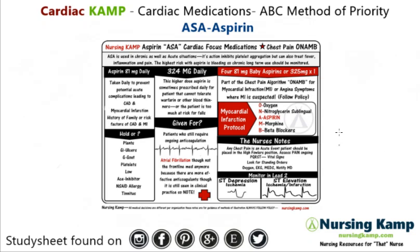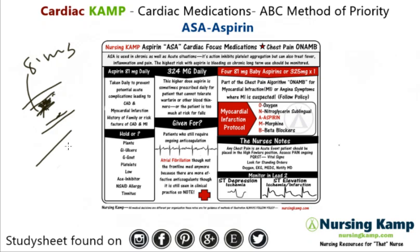First, aspirin is an antiplatelet. Whenever there is damage in the vessels, platelet aggregation starts to form. Aspirin 81 milligrams stops this from happening. With cardiovascular disease, when there's damage in the vessels through hypertension or diabetes, you start to get a lot of platelet aggregation, which is a risk for clots and plaques.